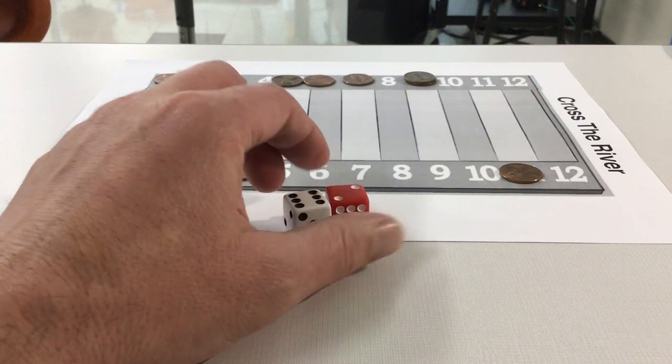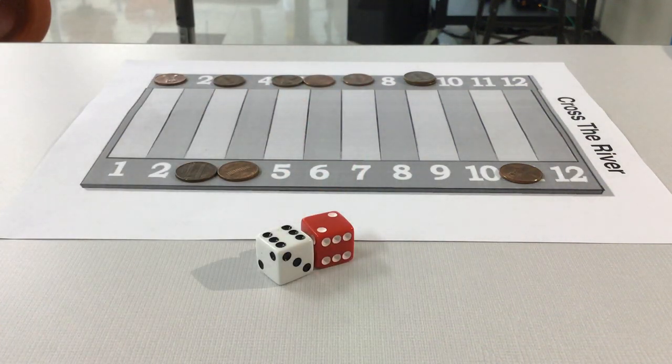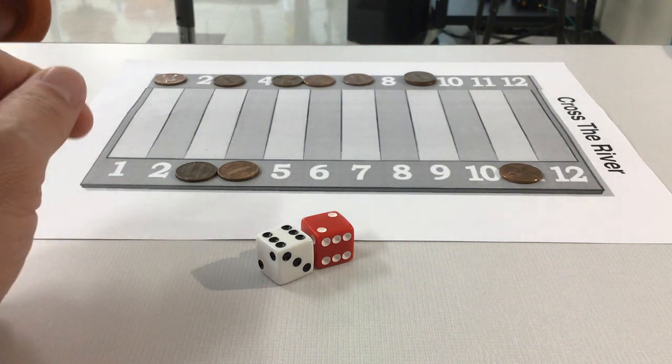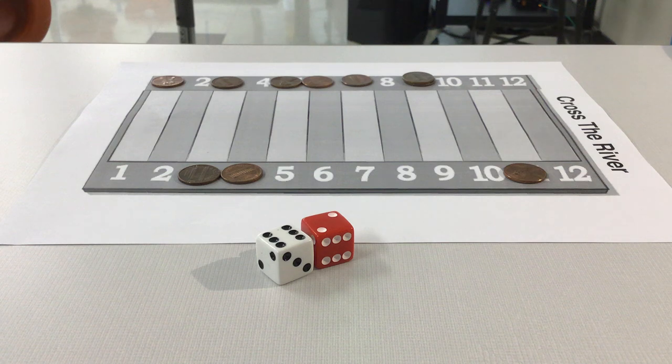Now what you want to do is you want to do five rolls per person and see who has the most pennies after that. Or you can do ten rolls. Really, you can do as many as you want. But that's how the game is done. So good luck. Again, look for strategies.